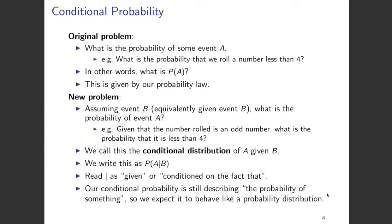What we are going to study here is conditional probability. Let us assume that there is some event B, or equivalently some event B is given, and we want to find out the probability of A given that B is given. An example of this: given that a number rolled is an odd number, we want to find the probability that it is less than 4. We are told the number rolled is odd — this information is already present to us — and using this information we calculate the probability that the number is less than 4. This is called the conditional distribution of A given B, and we write it as P(A|B), that is, the probability of A given B.